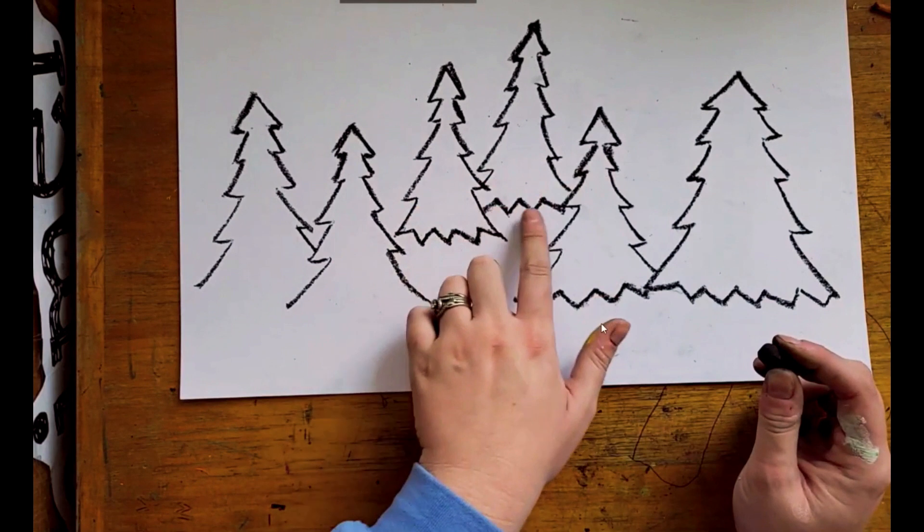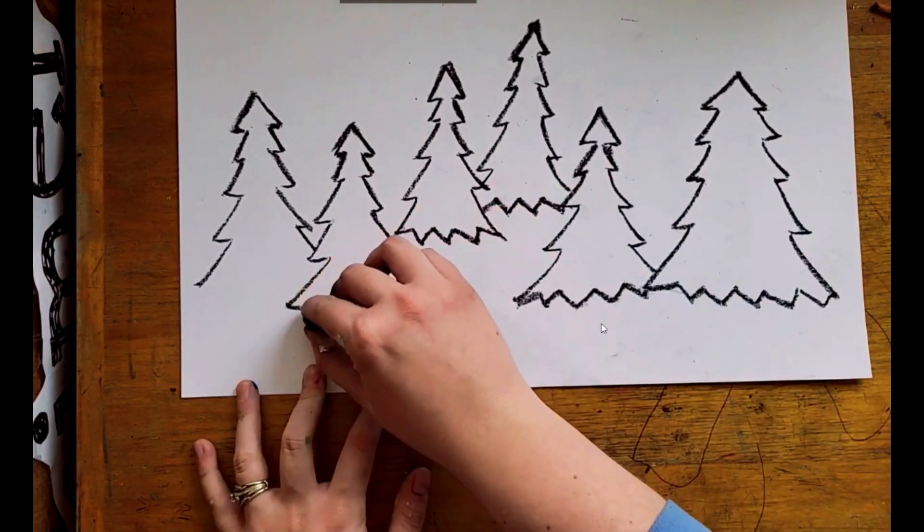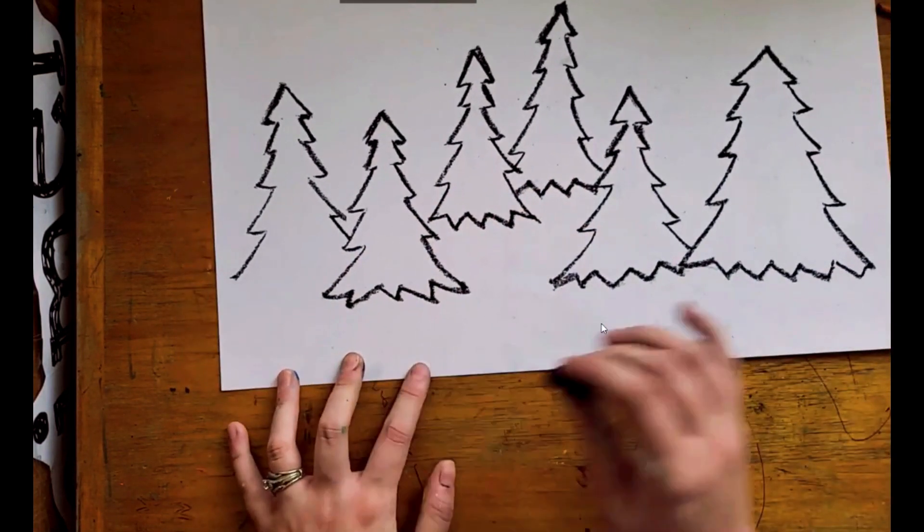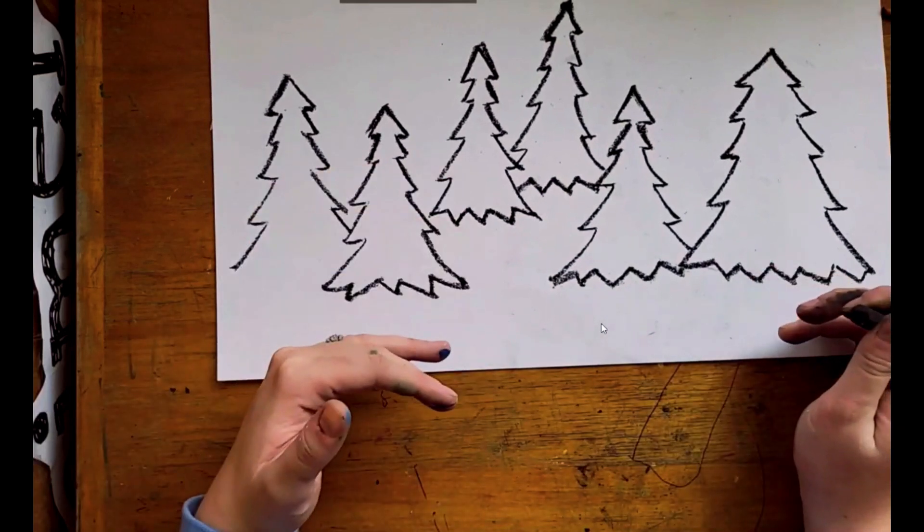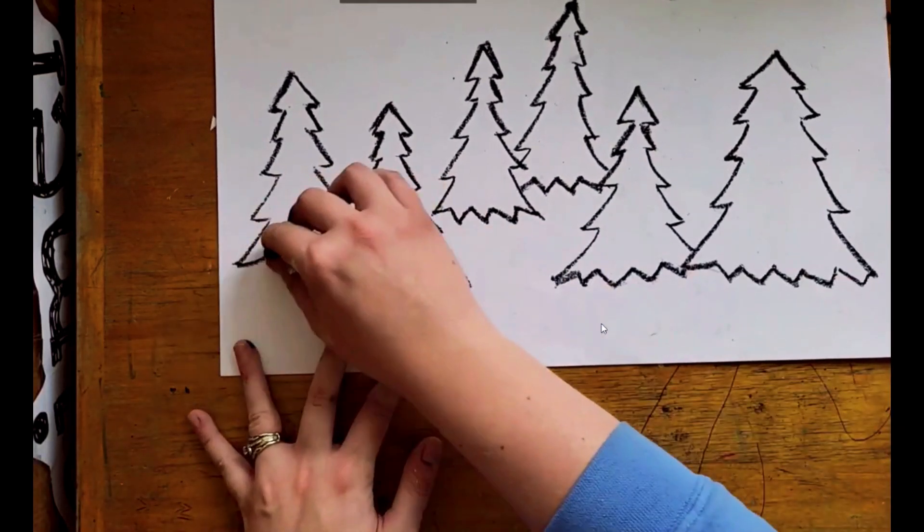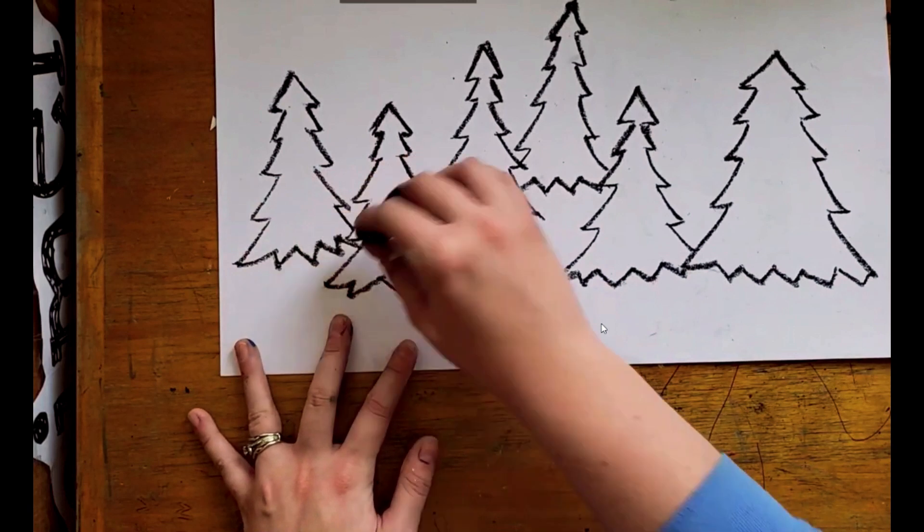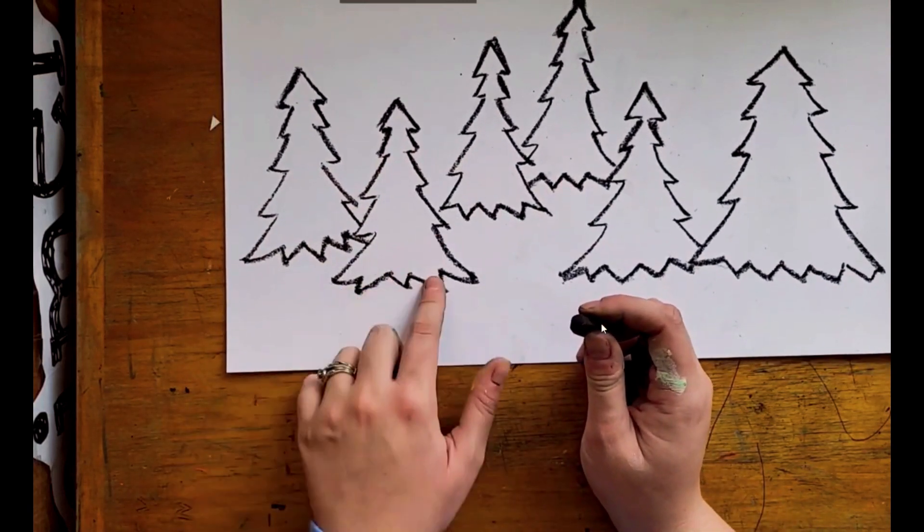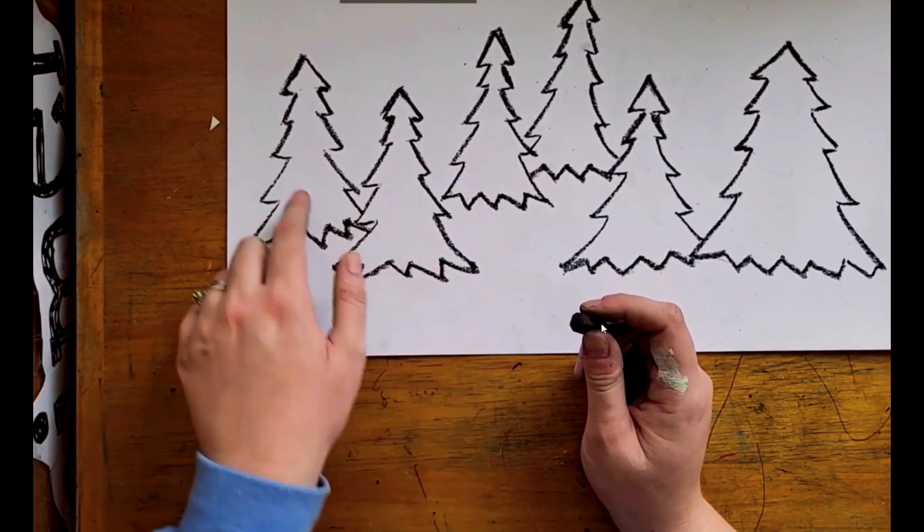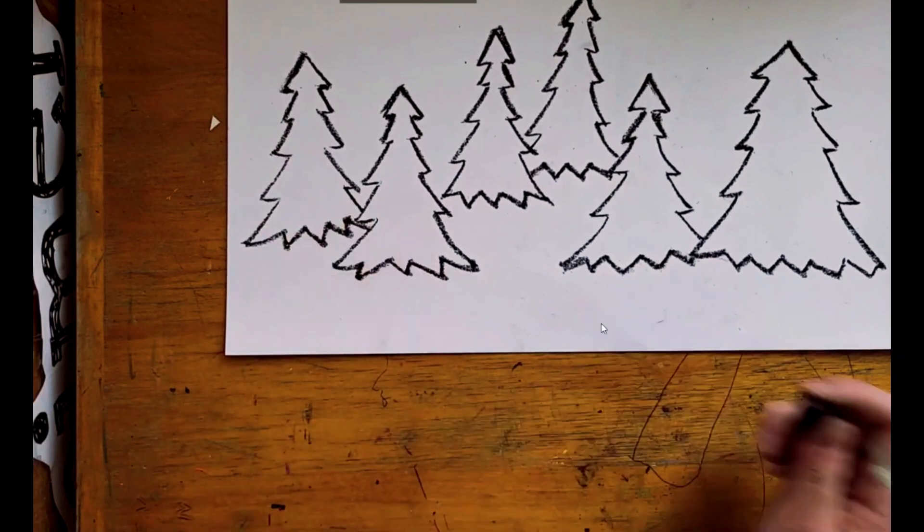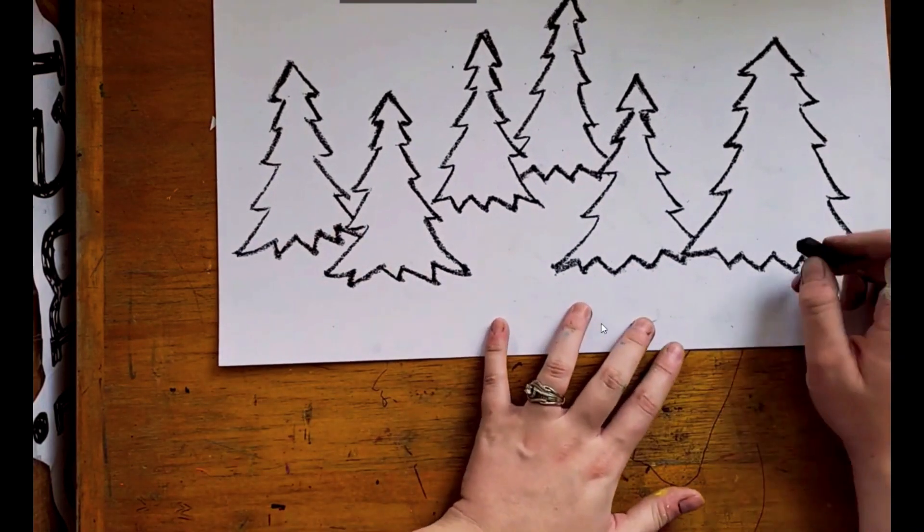So this one's overlapping that one a little bit. Usually you want to make sure the ones that are closest to the bottom are the ones that are in front. So because this one is closer to the front, it's closer to that one than that one is. So this one's going to be behind that one. If you're not sure, if you need help with that, just let me know.